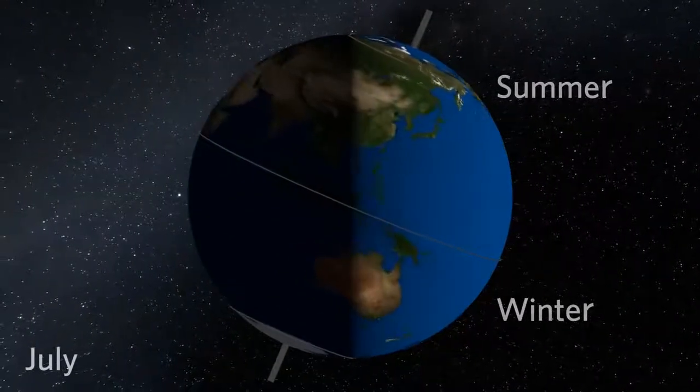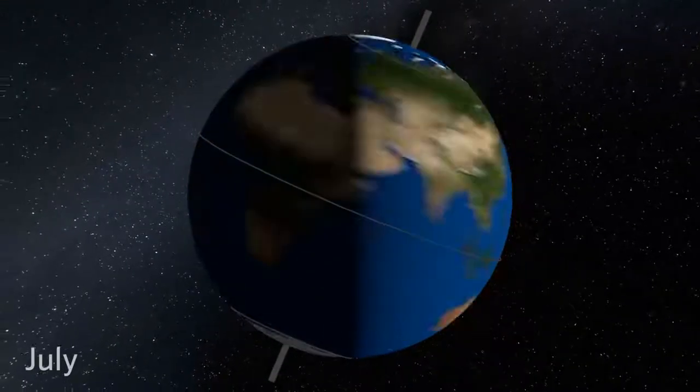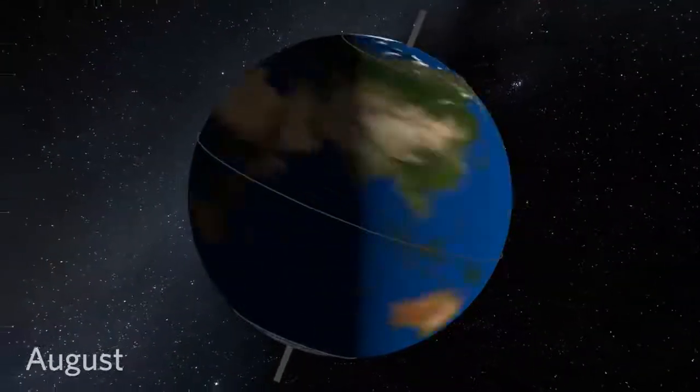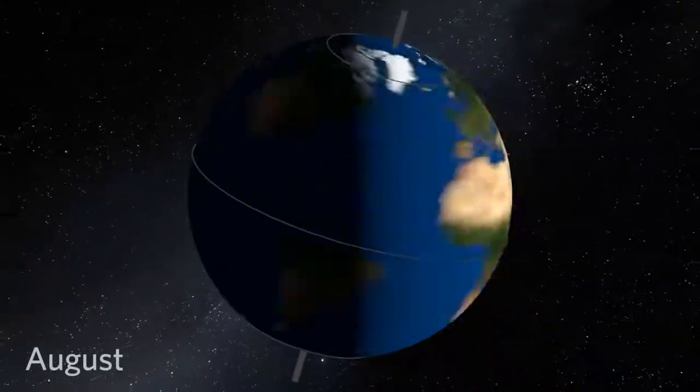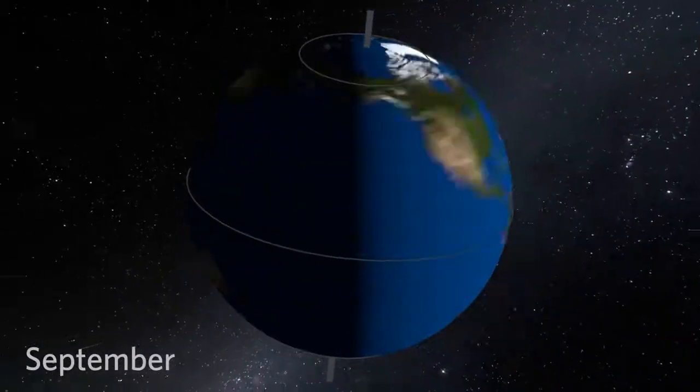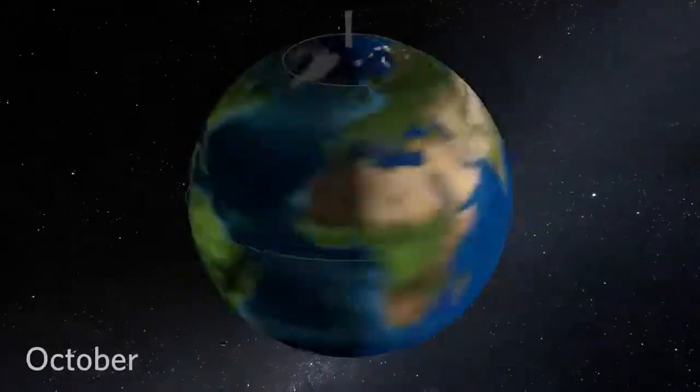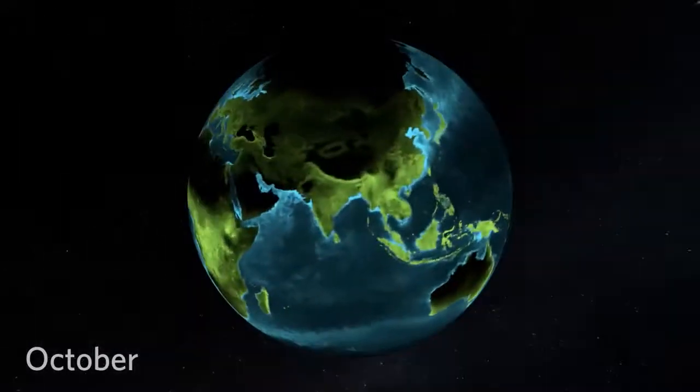We observed how Earth's tilt creates the different seasons throughout the year. How does this affect life? Plant life and other photosynthesizers, we call them primary producers, depend on sunlight. They respond to the changes in the seasons.